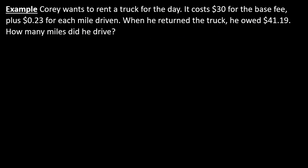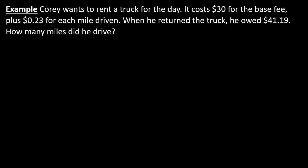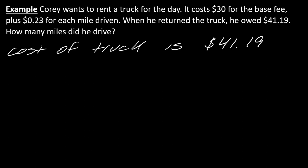So now let's go to the next one. Corey wants to rent a truck for the day — it costs $30 for the base fee plus 23 cents for each mile driven. When he returned the truck, he owed $41.19. How many miles did he drive? Figure out where the equal sign would naturally go. You might want to think about summarizing the situation in a sentence like we did in the last problem. The cost of the truck is $41.19 — that's really me taking the whole situation and figuring out where the 'is' naturally falls.